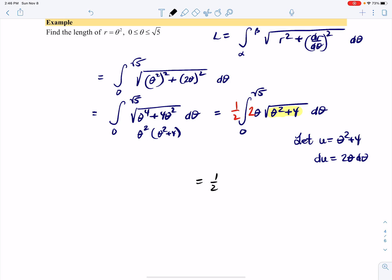That means this is (1/2) times the integral. Now 2θ dθ gets absorbed into du, and we have √u. I'm also going to change the limits to the new variable u because it's easier to integrate.